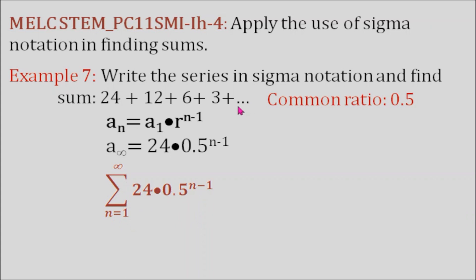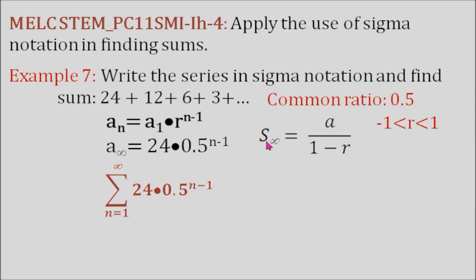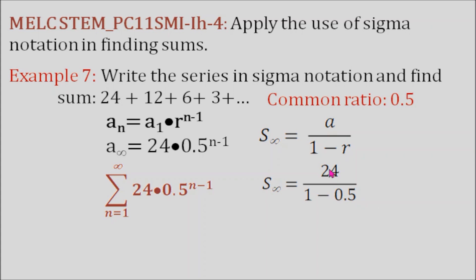Looking at the next terms, they become smaller and smaller. We have a geometric series formula when our ratio is between negative 1 and positive 1. The formula is S sub infinity equals a over 1 minus r. Our first term a is 24 and our r is 0.5. So 24 divided by 1 minus 0.5 gives us 48.